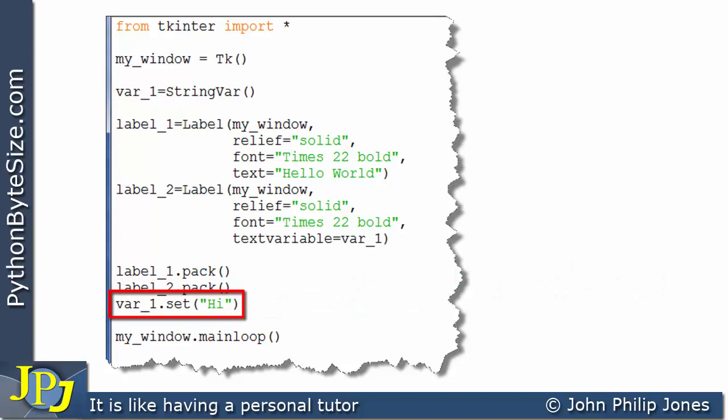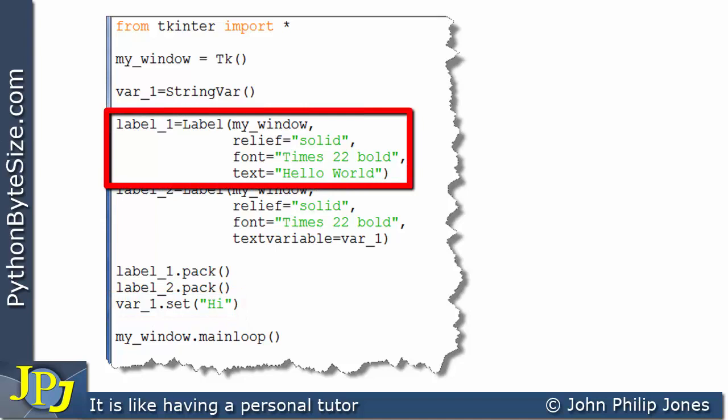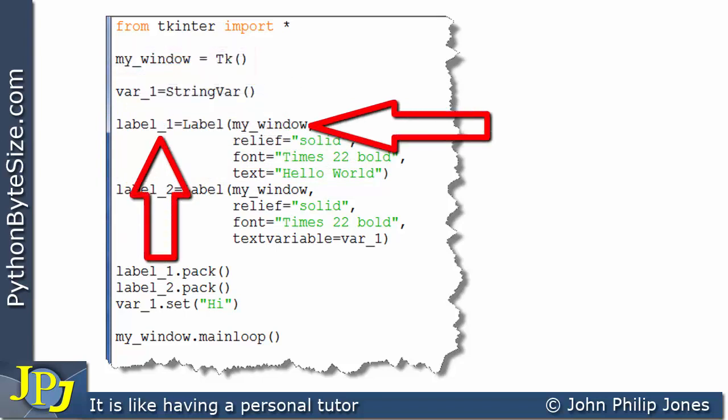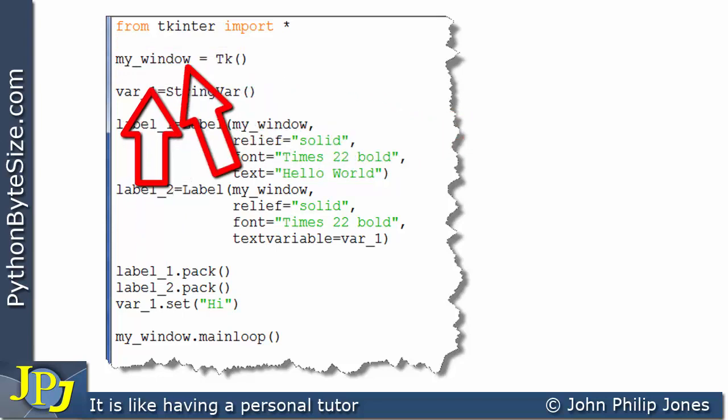We've seen it in a previous video, but I wish to do a comparison here with respect to two ways in which you can change the contents of the text within a label. Let's consider this label first. The first thing we can say about it is I'm passing in this, which is the window that was created here. This is telling label one that it's going to be associated with my window.